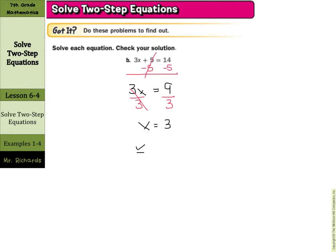And once again, to check this, rewrite your original equation, 3x plus 5 equals 14. Make your substitution in for x, which was 3. 3 times 3 is 9. And 9 plus 5 is 14. So 14 equals 14. Our answer of x equals 3 is correct.